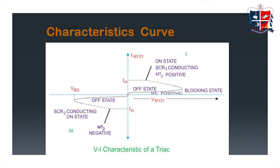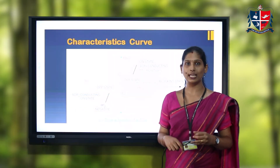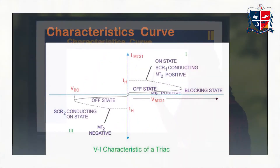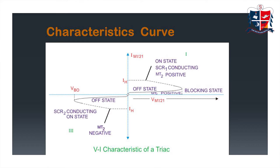Now let's analyze the VI characteristic curve of TRIAC. We prefer mode one and mode four — the normal modes of operation. Quadrant one corresponds to mode one, where MT2 is positive and SCR1 conducts. The TRIAC remains in the off state until it reaches the breakover voltage; when it exceeds the breakover voltage, the voltage drop decreases to a low value and the TRIAC starts conducting. The minimum current at which it conducts is termed the holding current. A similar operation takes place in quadrant three, where mode four operation occurs.